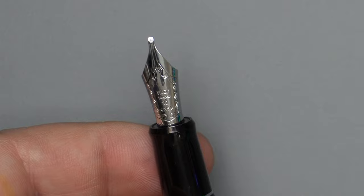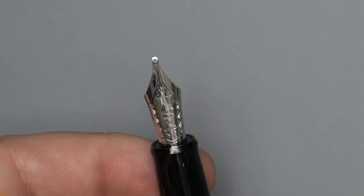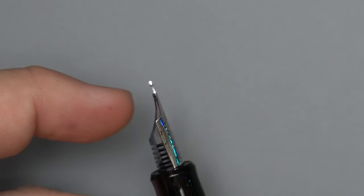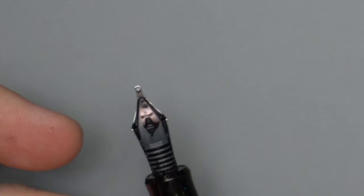This gives you, in effect, three tines. Then, looking at the tipping there, you'll see that it is nice and flat across the top. It is also flat here at the front of the nib and on the bottom.